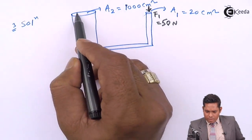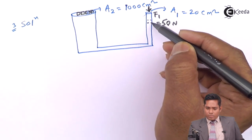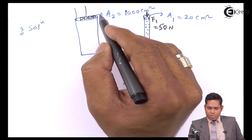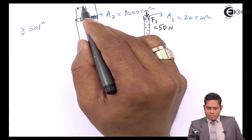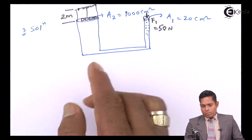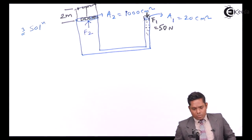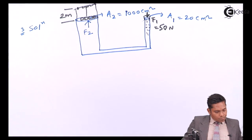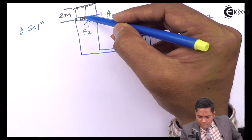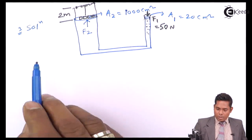Some mass is placed on the output piston. When you push the input piston, it carries this mass and moves it upward by a distance of 2 meters. The force acting on the output side is F2. The question asks: what is the weight of the support on the output piston?